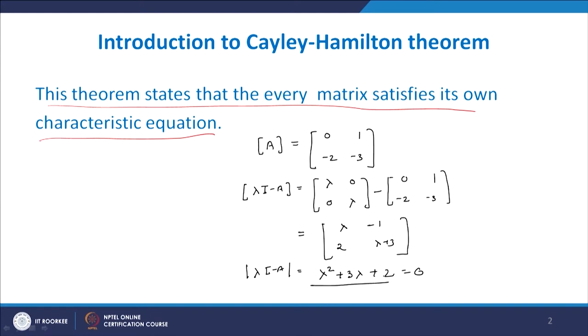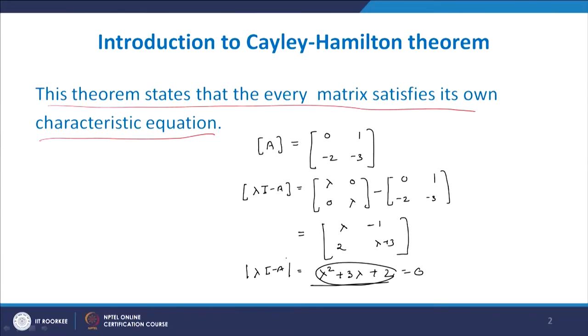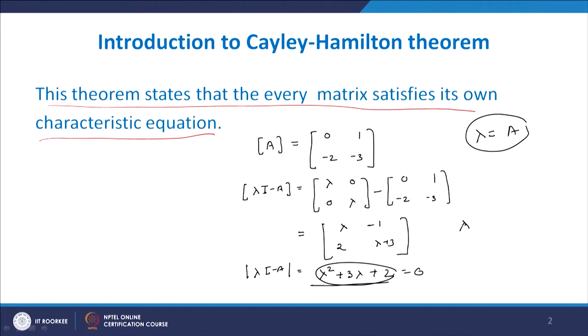This is the characteristic equation in terms of λ. Normally we calculate the eigenvalues of this matrix, and replacing those eigenvalues into the equation gives zero. But the Cayley-Hamilton theorem states that instead of λ, if you replace A — the original matrix — you will get A² + 3A + 2I = 0. So λ and A can be interchanged. That is the basic idea of the Cayley-Hamilton theorem.